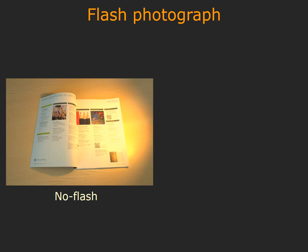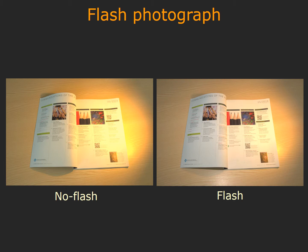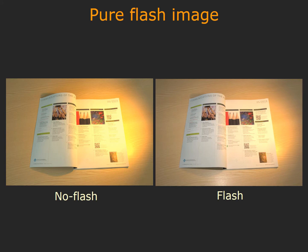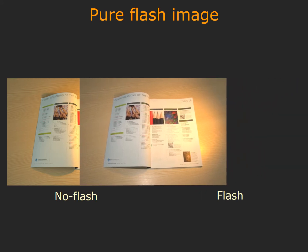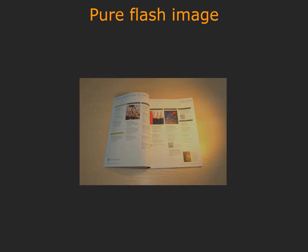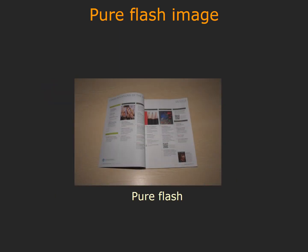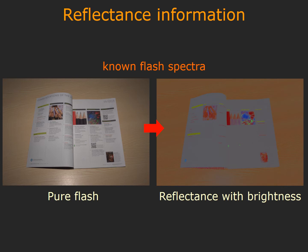In our work, we take a step towards source separation in a Lambertian scene using flash photography, i.e., two photographs acquired with and without the use of camera flash. The key insight behind our technique is that the flash image provides the image under a single illuminant, thereby enabling us to infer the reflectance spectra up to a per-pixel scale. Specifically, if we know the flash spectra and the camera response, we can get the reflectance at each pixel up to a brightness scale.